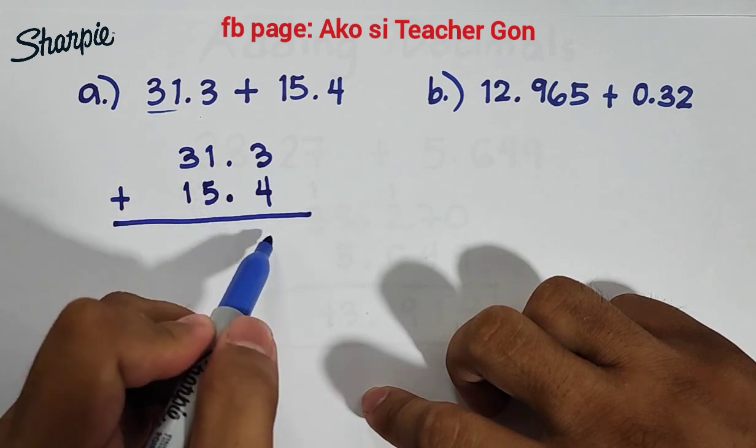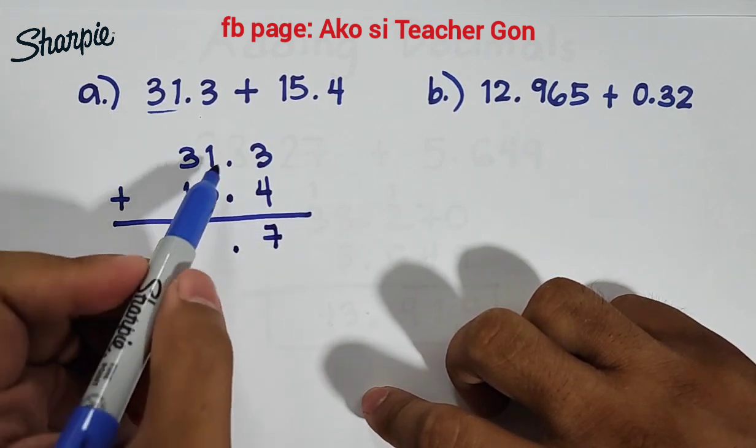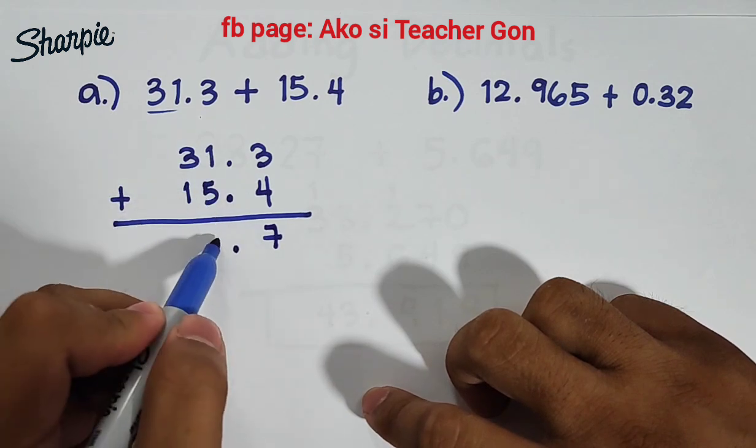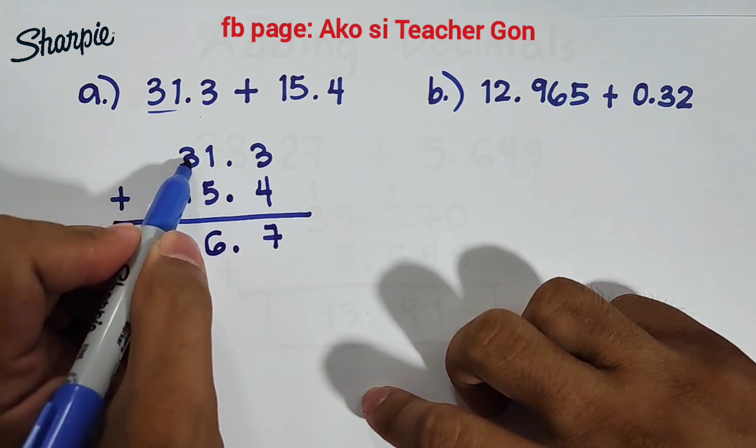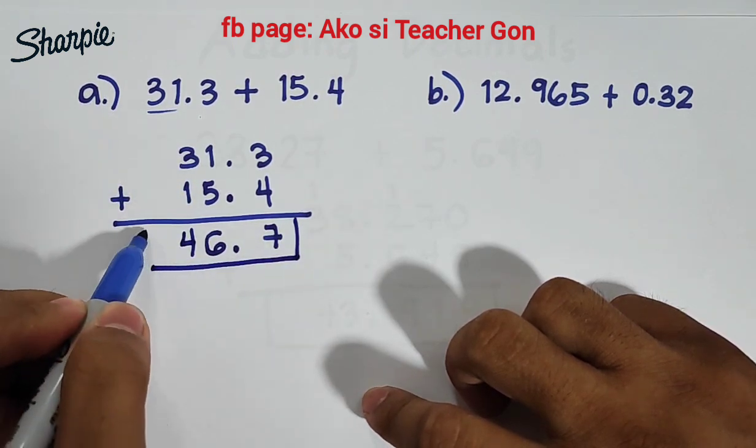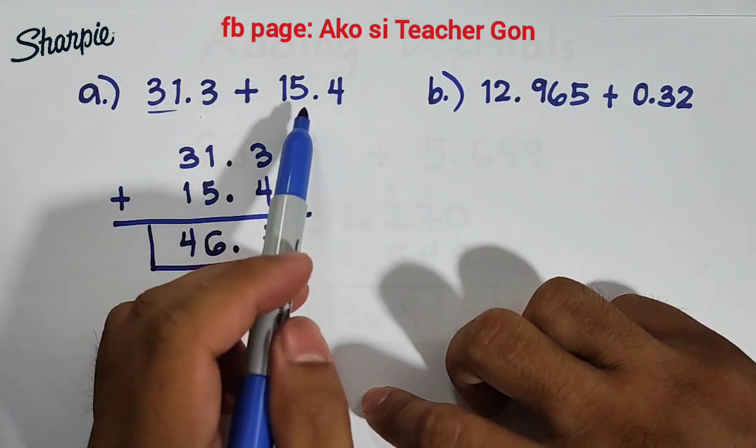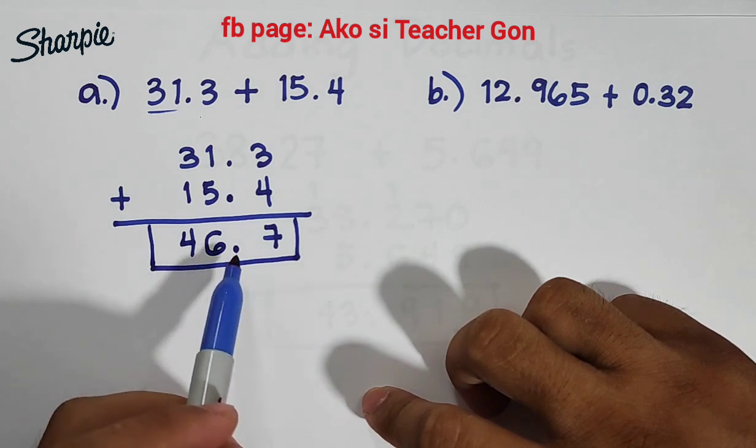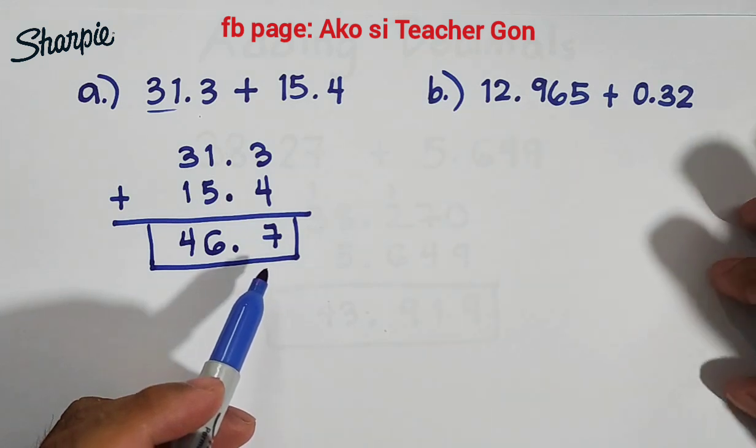3 plus 4 is equal to 7, copy your decimal point, 1 plus 5 which is equal to 6, and lastly 3 plus 1 which is equal to 4. Therefore the sum of 31.3 plus 15.4 is 46.7.